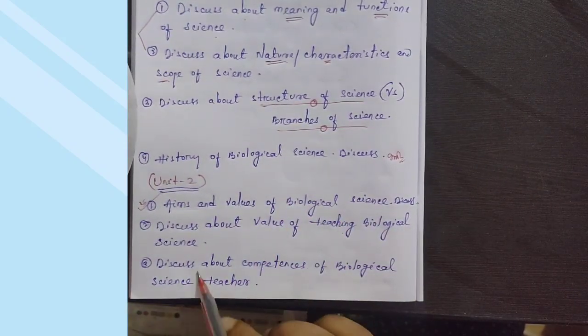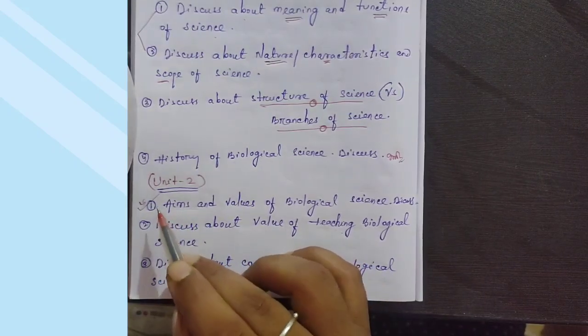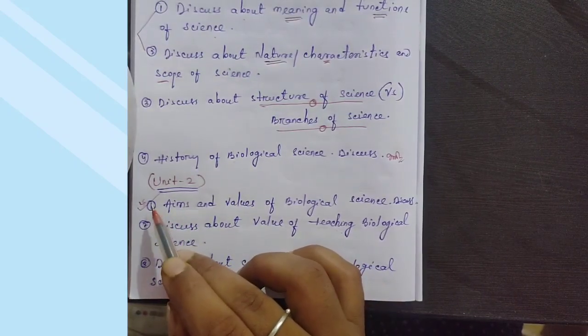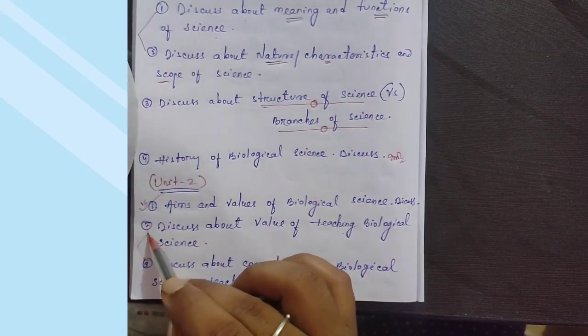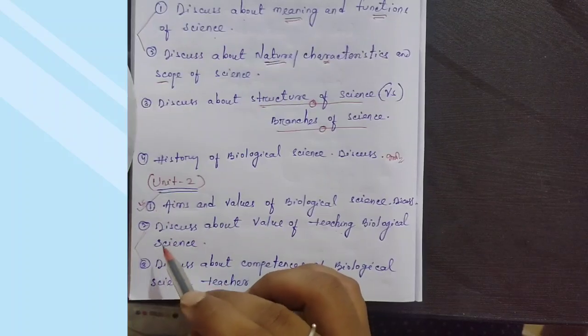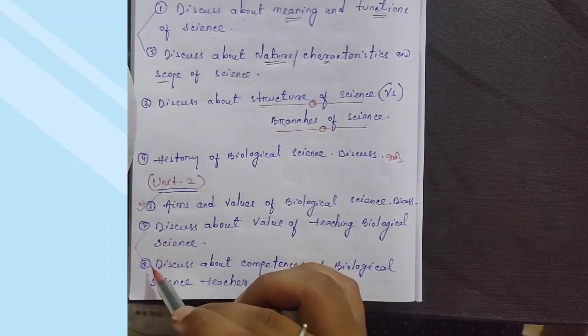The last question is about competency of biological science. These five-mark questions are most important. Even if chances are less, you must have some brief idea about question number two and question number three.